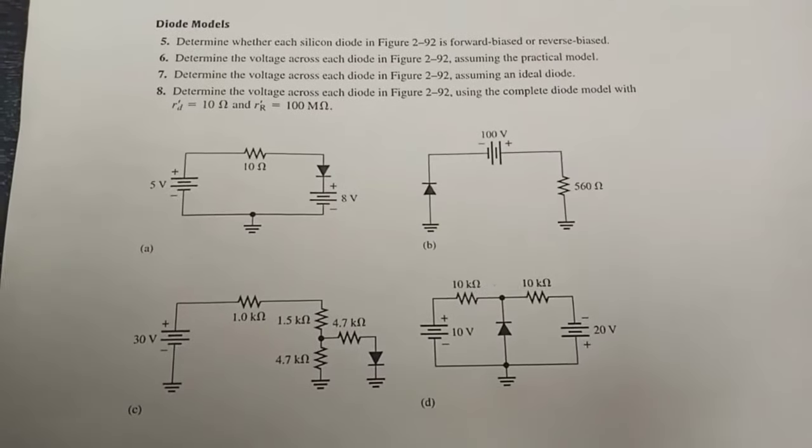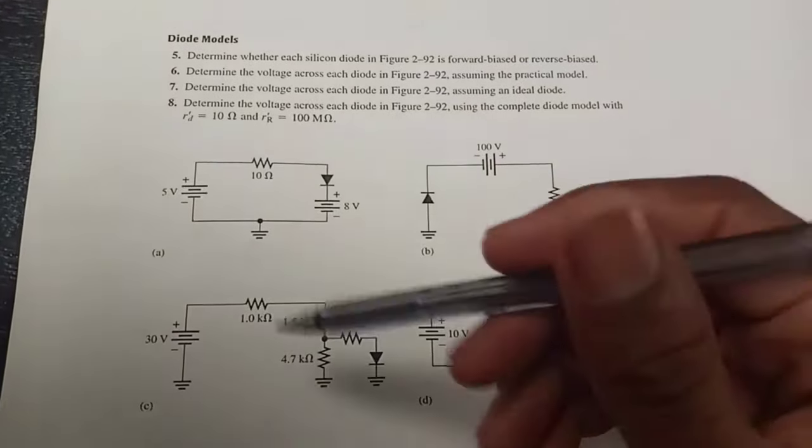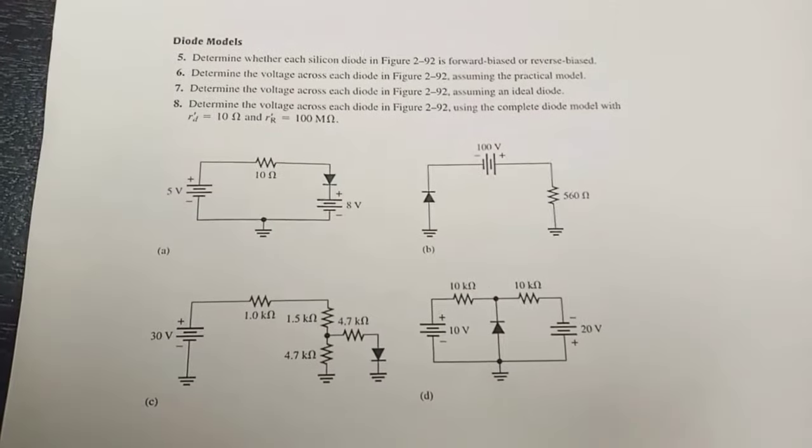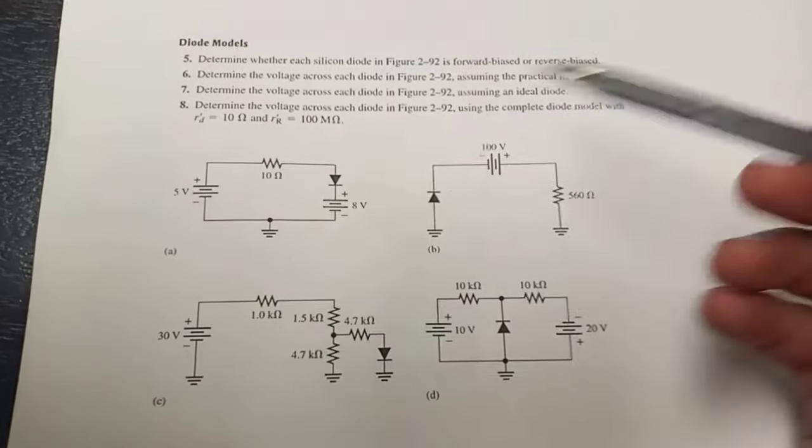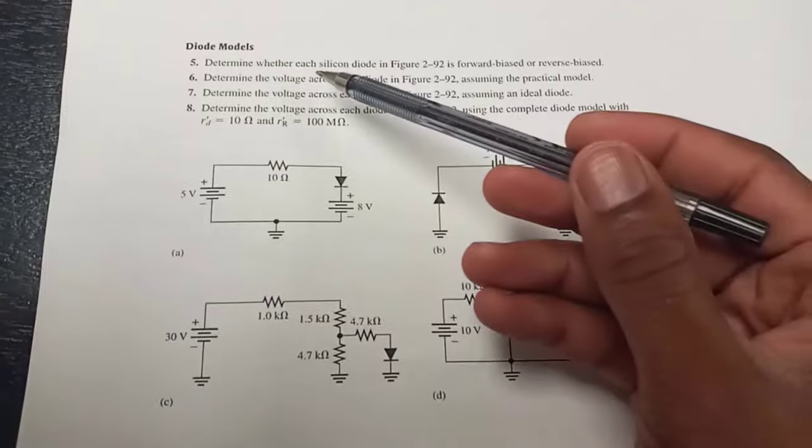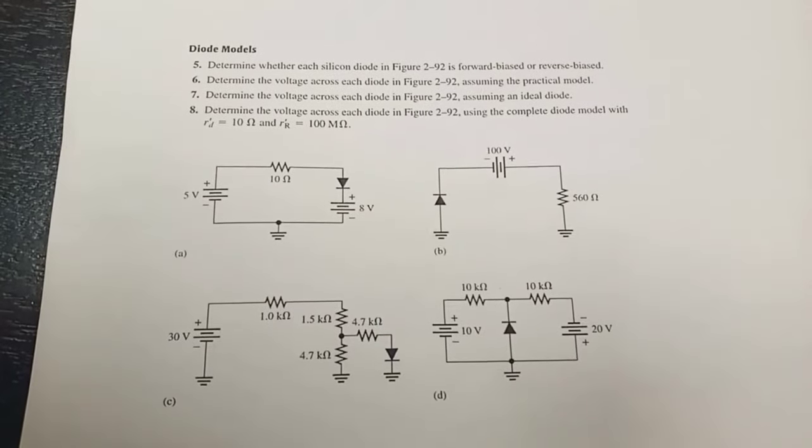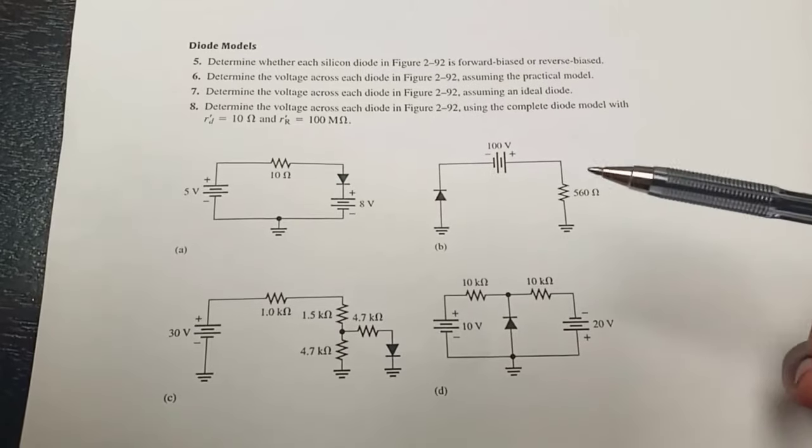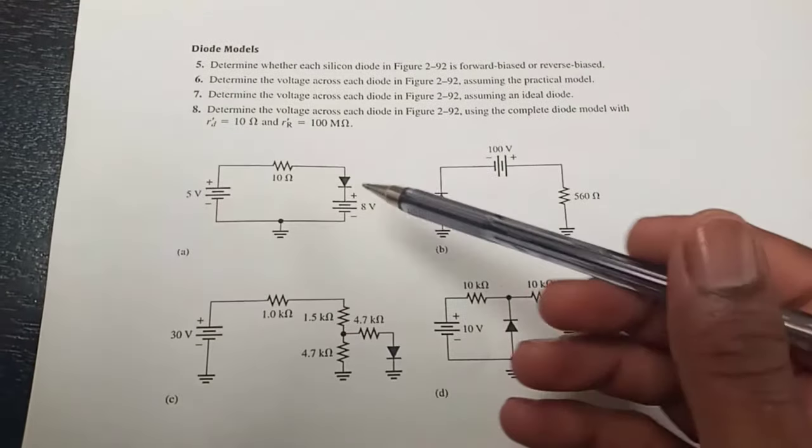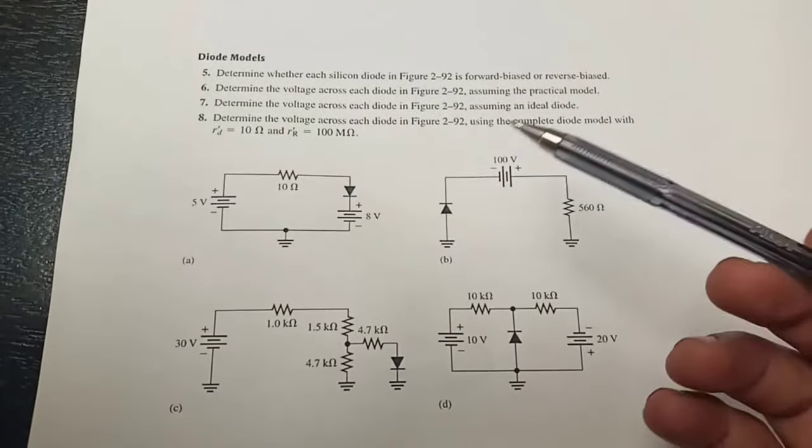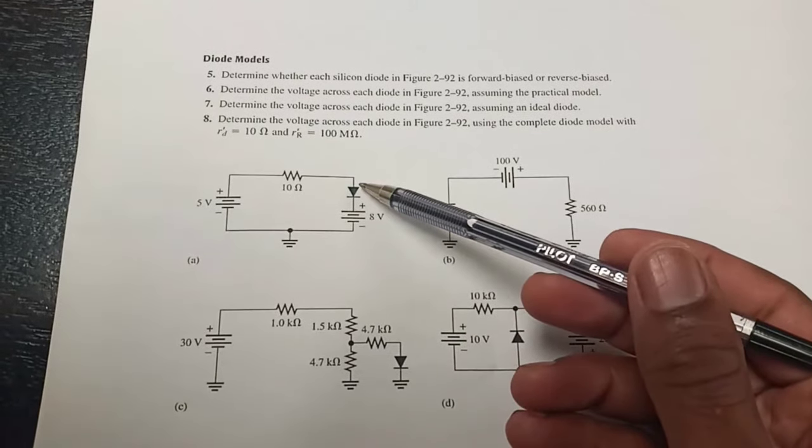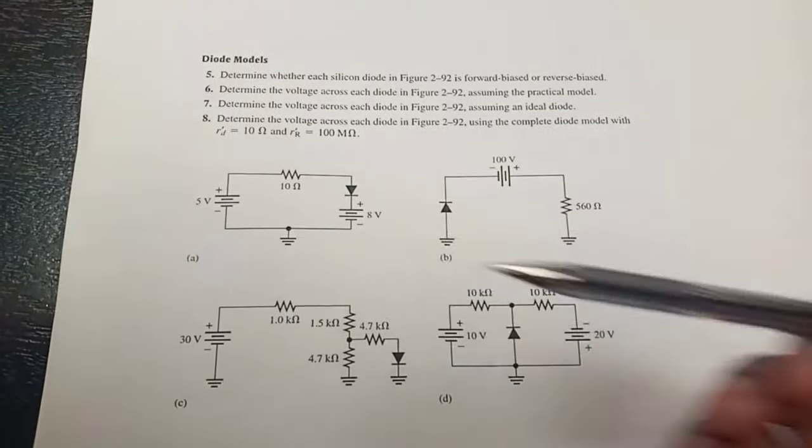Okay, so for those who still have questions regarding this circuit here, the first question is to check whether the diodes are forward biased. We understand that in order for a diode to be forward biased, the anode here needs to be more positive in terms of the supply voltage.